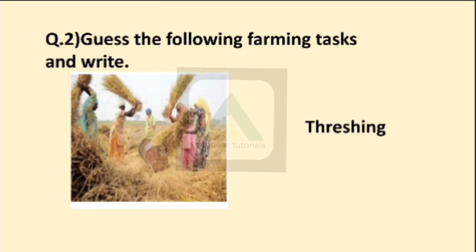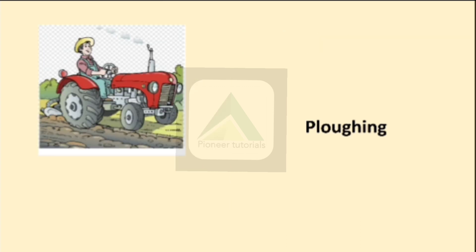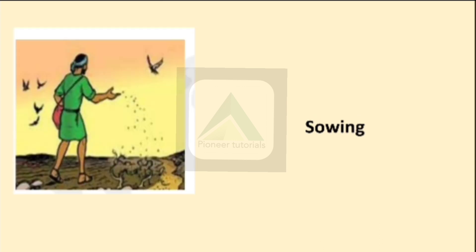Question number 2: guess the following farming task and write. The answer is threshing — they try to remove the grains. The next one is sowing, that is beach bona.